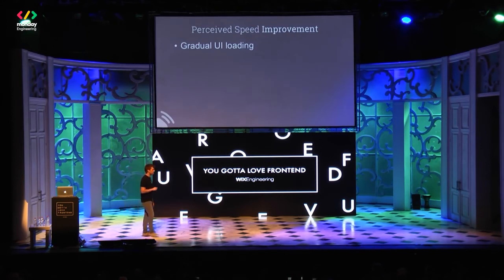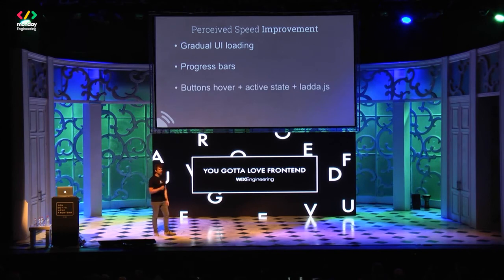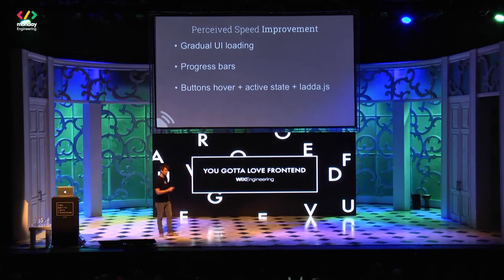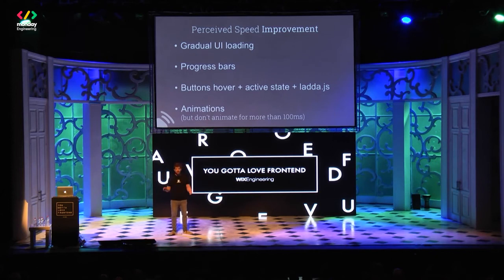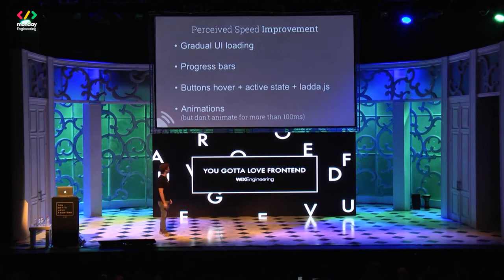Other methods to achieve perceived performance: use gradual URI loading. You can use progress bars, but do me a favor — don't use progress bars that start fast and then become slow. Use progress bars that start slow and become fast. Use effects on buttons: hover effects, active effects. Ladda.js is a great library to give indication that something is happening on the server. Use animations, but use them carefully — some of us are overusing CSS effects. Too many animations, or animations that are too slow, are harmful. Use short but sweet animations.